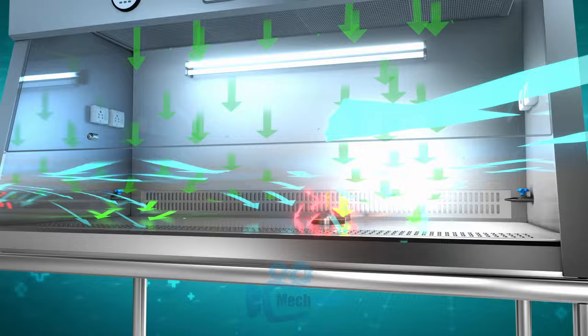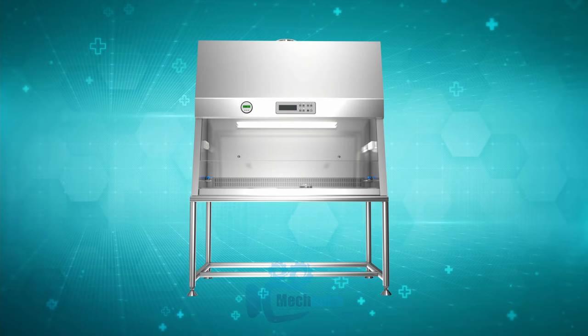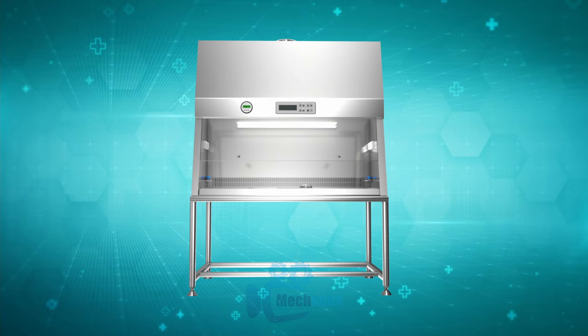The air supply to the inside chamber protects the researcher by forming an air curtain on the front space of the biological safety cabinet. In this way it provides three protections: safety of researcher, safety of sample, and safety of environment.